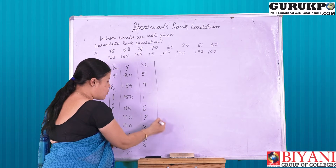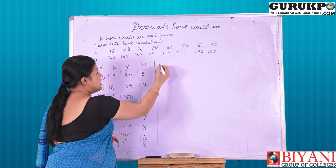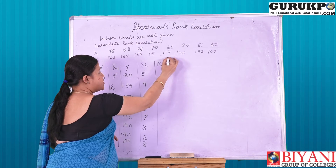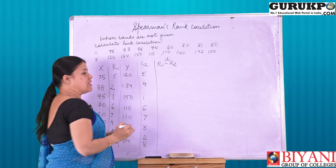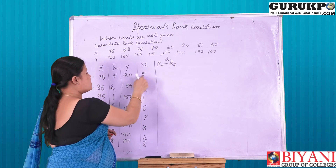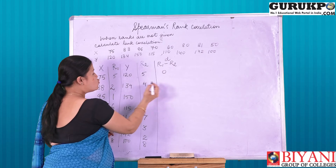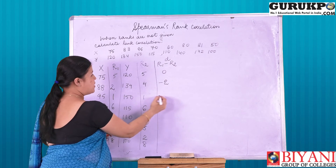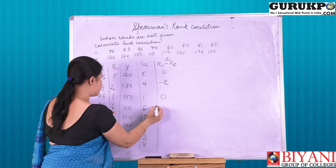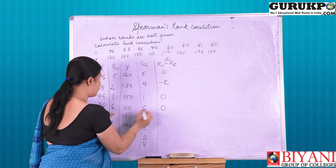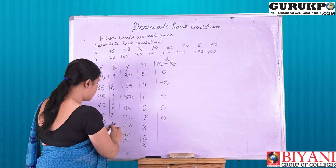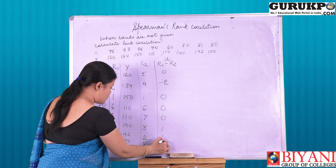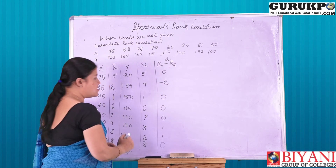The next step is we have to subtract R1 minus R2, and it is denoted by D, that is deviation. So: 5 minus 5 is 0, 2 minus 4 is minus 2, 1 minus 1 is 0, 6 minus 6 is 0, 7 minus 7 is 0, 4 minus 3 is 1, 3 minus 2 is 1, and 8 minus 8 is 0.